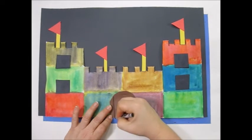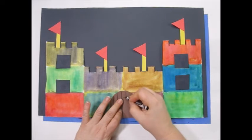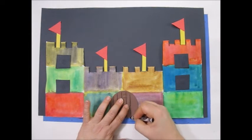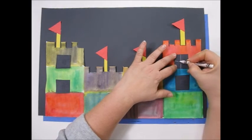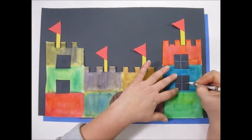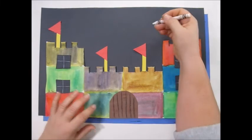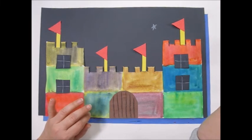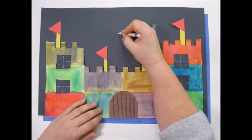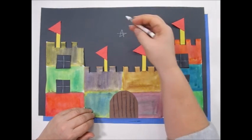You can use your crayons for details on the doors and the windows or even stars in the sky. Remember how we do stars? We start with the letter A and give her long hands and then we touch our toes.